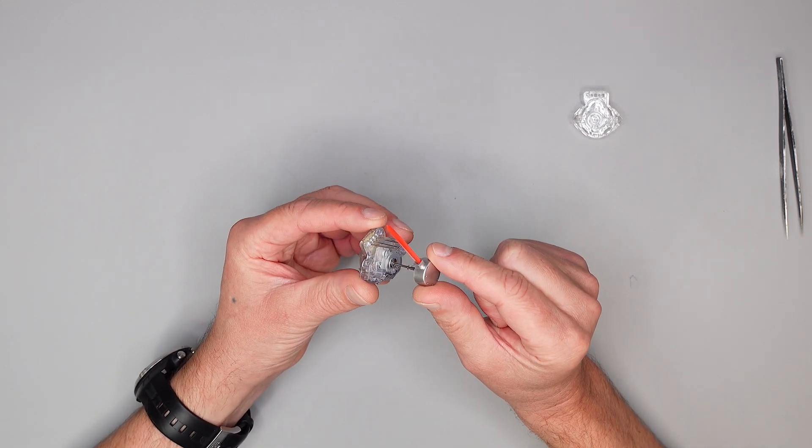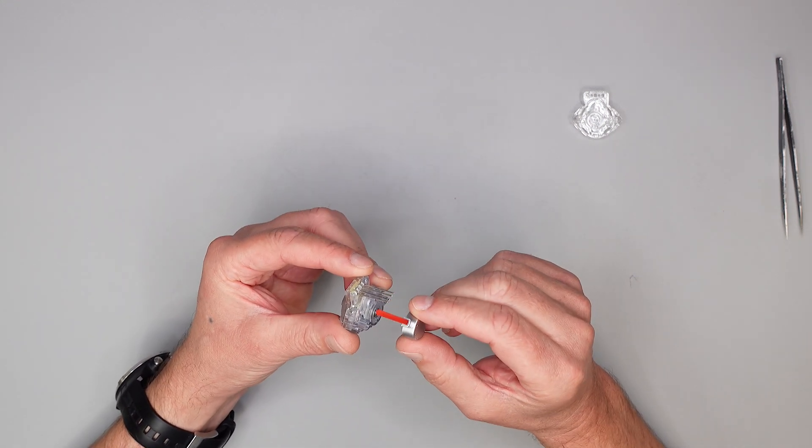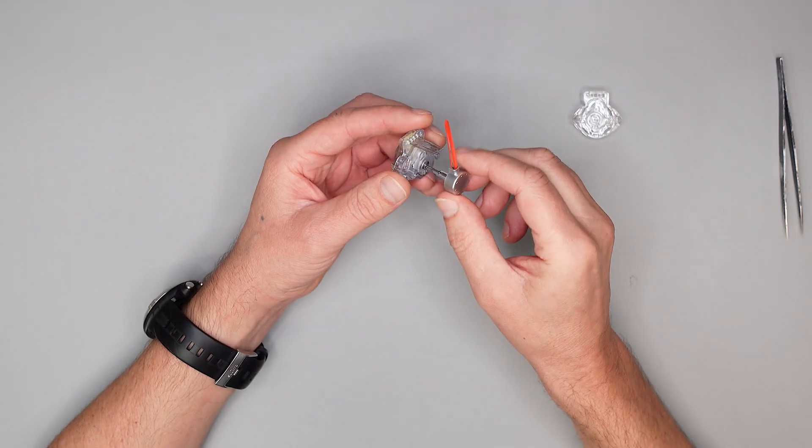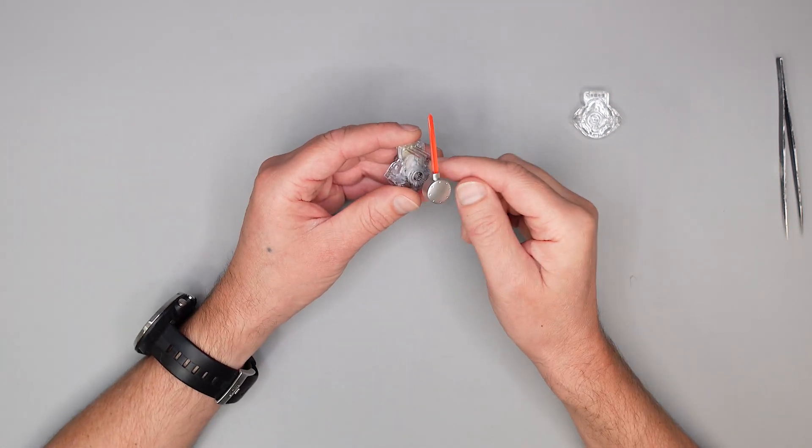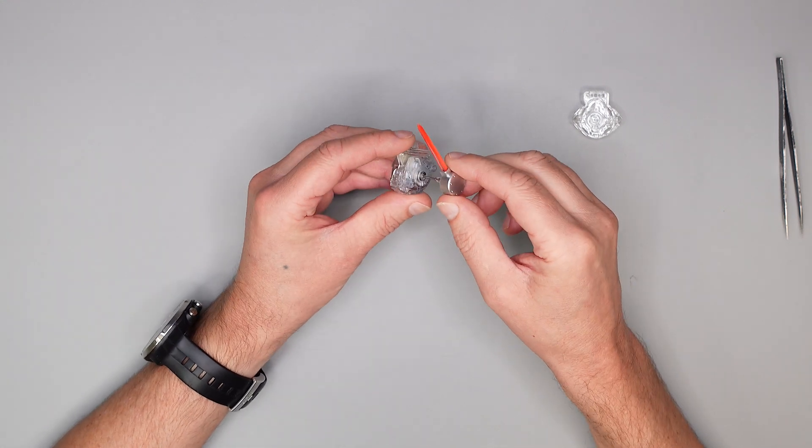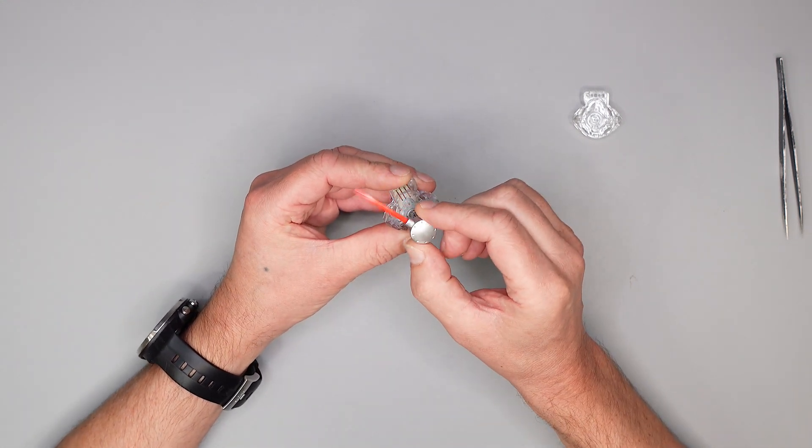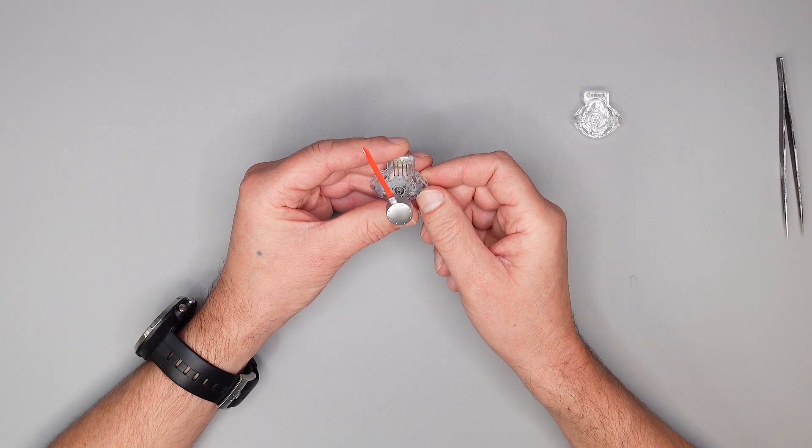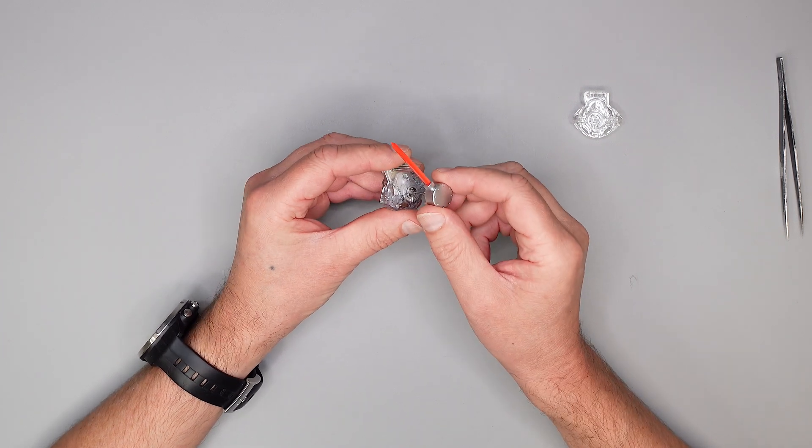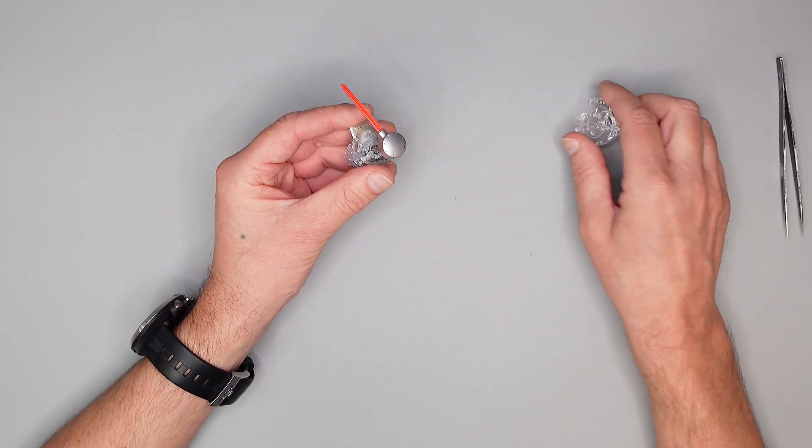Wenn man jetzt mal genau lauscht, ich drehe jetzt mal und halte ihn ans Mikro. So, da habt ihr jetzt dieses Rattern gehört. Das liegt daran, dass hier die Zahnräder nicht richtig ineinander fassen, und deswegen rattert der Zeiger dann auch. Und die Reparatur ist nicht so aufwendig. Was ich euch daher zeige ist dann gleich hier die neue Kappe, wie man die einbaut. Und los geht's.